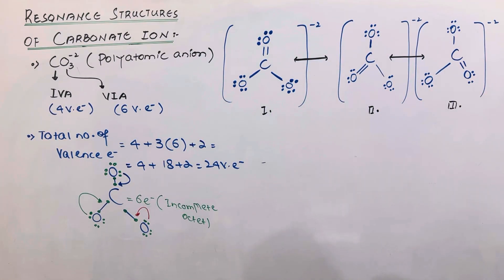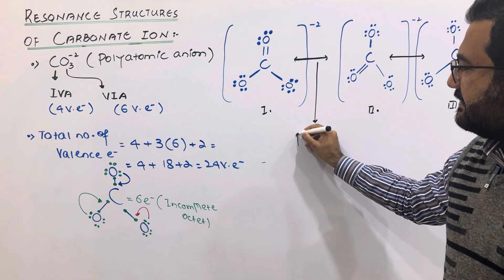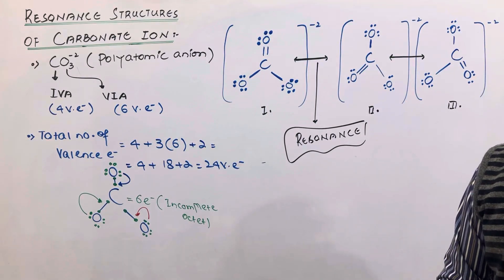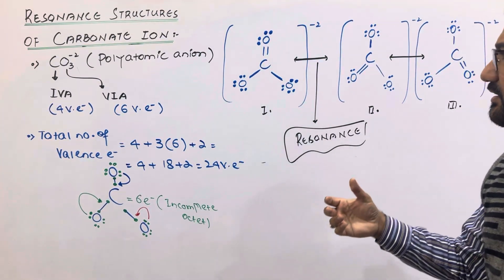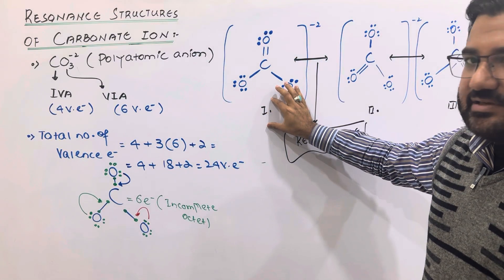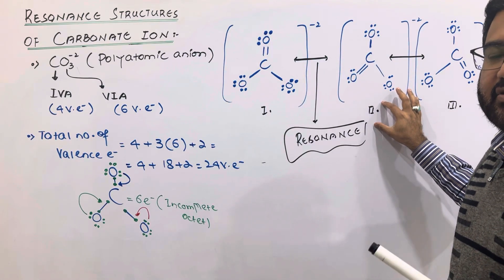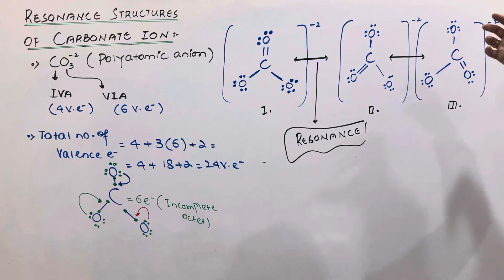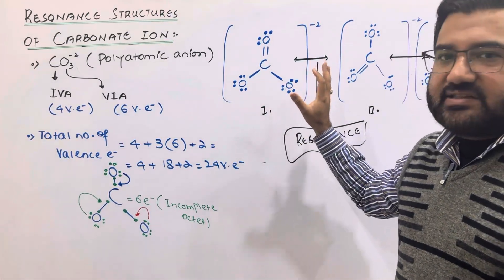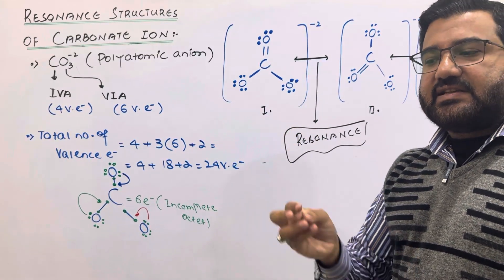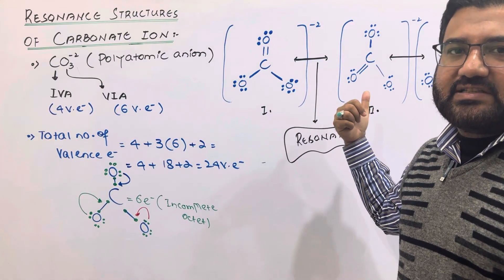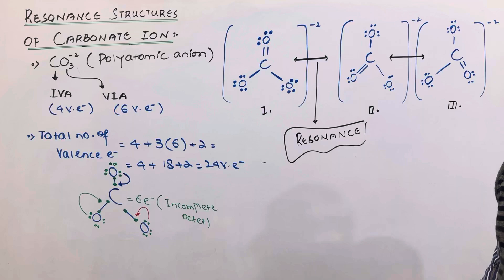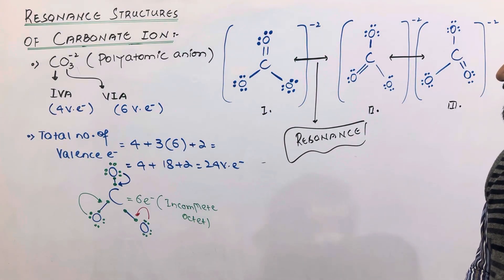Carbonate ion has 3 resonating structures, and this double-headed arrow is the symbol of resonance. Keep in mind that resonance structures do not have any actual existence. It is not that the carbonate ion exists in one form for some time, then shifts to the second form, then the third. The resonance structures do not have actual existence, and the substance never exists for any fraction of time in any of these three structures. These are just proposed hypothetical structures of the carbonate ion, and there is no dynamic equilibrium between them.